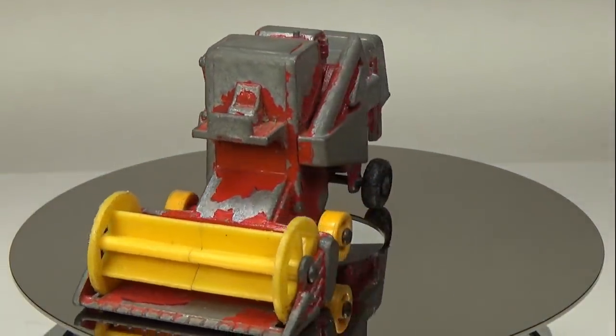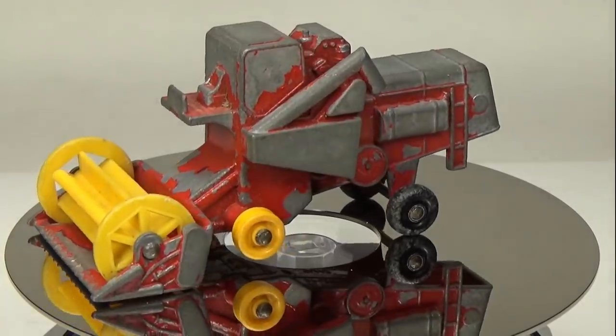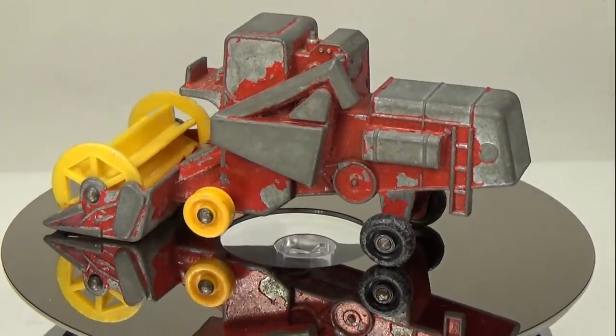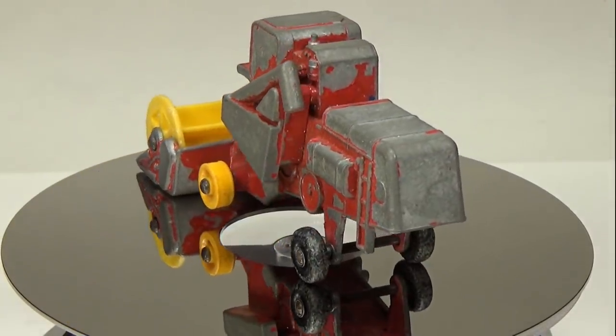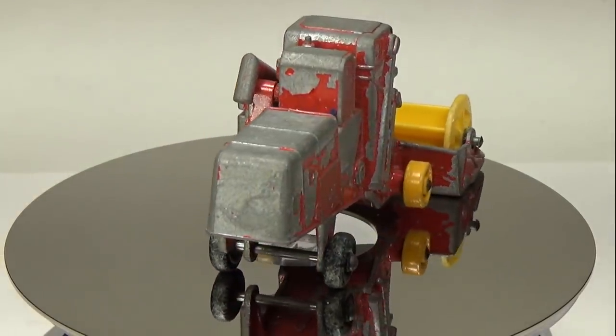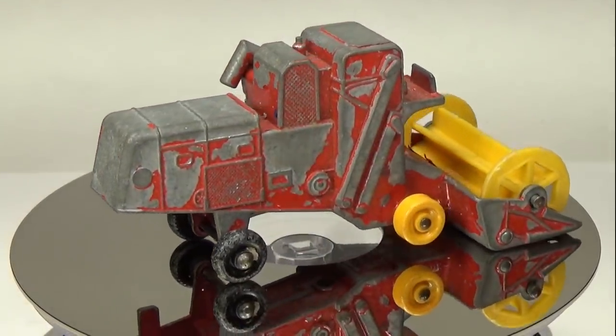This is the Matchbox No. 65C Kloss Combine Harvester made by Lesney in 1967. A rather simple and cheap model to obtain, it possesses quite a lot of detail and engineering.